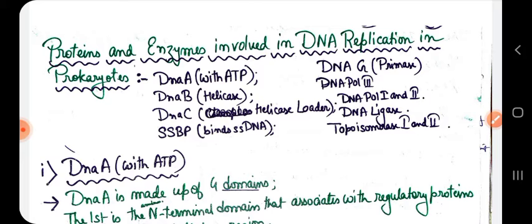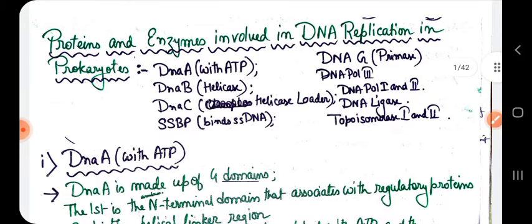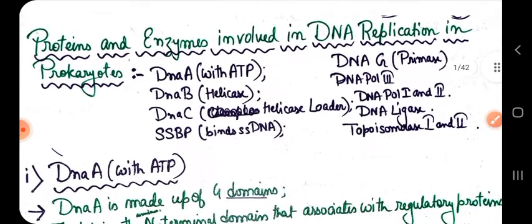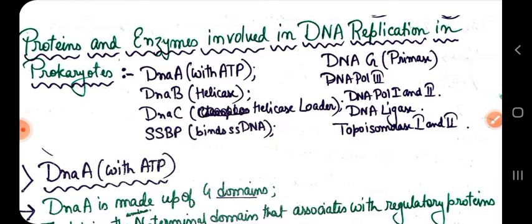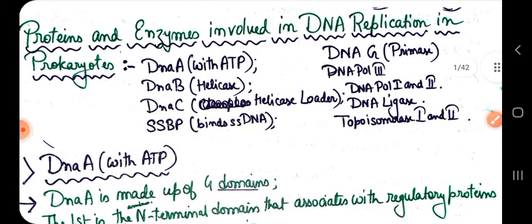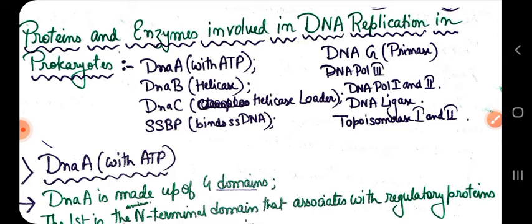DnaC is actually called the helicase loader. DnaC helps DnaB to interact with DnaA and bind at the unwinding site of the origin. SSBP — single-stranded DNA binding protein — binds to the single-stranded region of DNA.